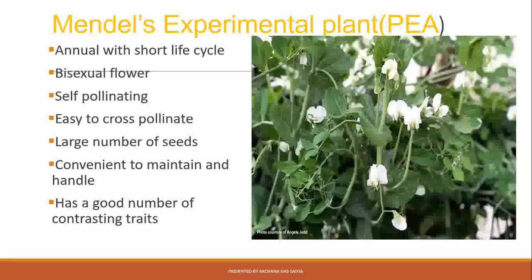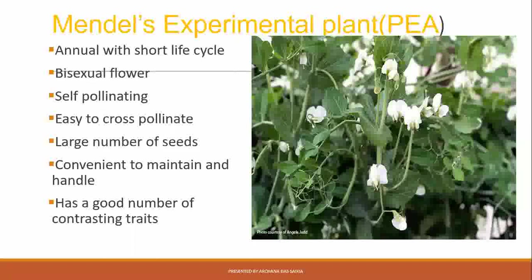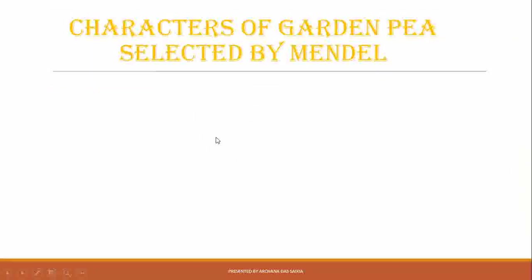Contrasting traits means certain characters have totally opposite forms — for example, height is a character and the traits are either tall or short. Flower color is a character with traits of yellow, white, or purple. These are some of the many reasons why Mendel selected the pea plant. He selected 7 characters from pea plants to carry out his experiments.